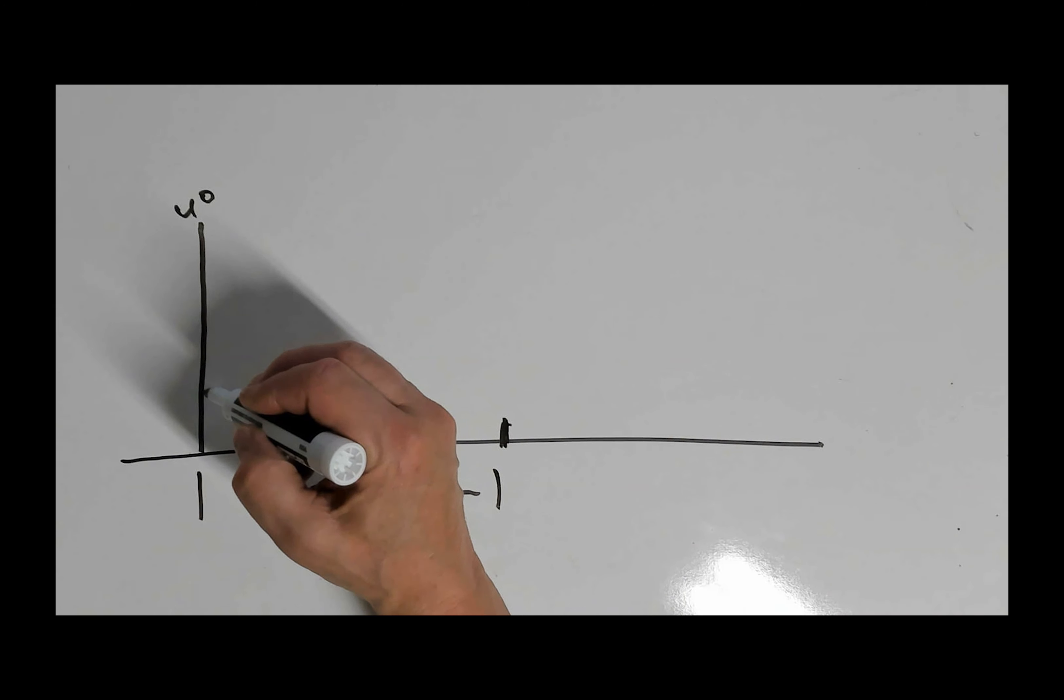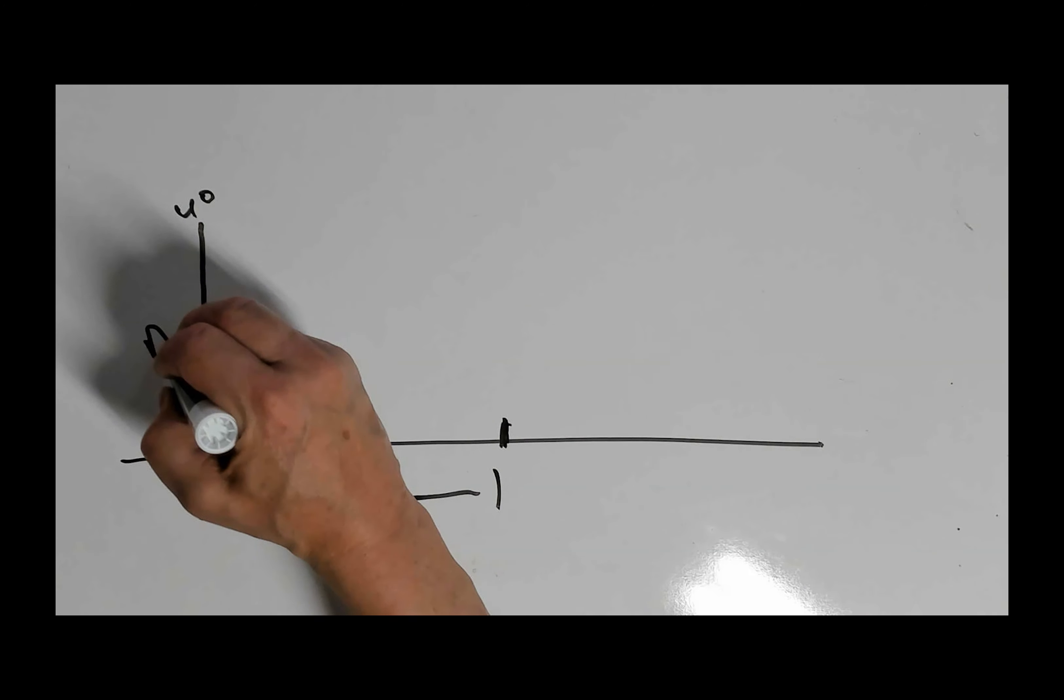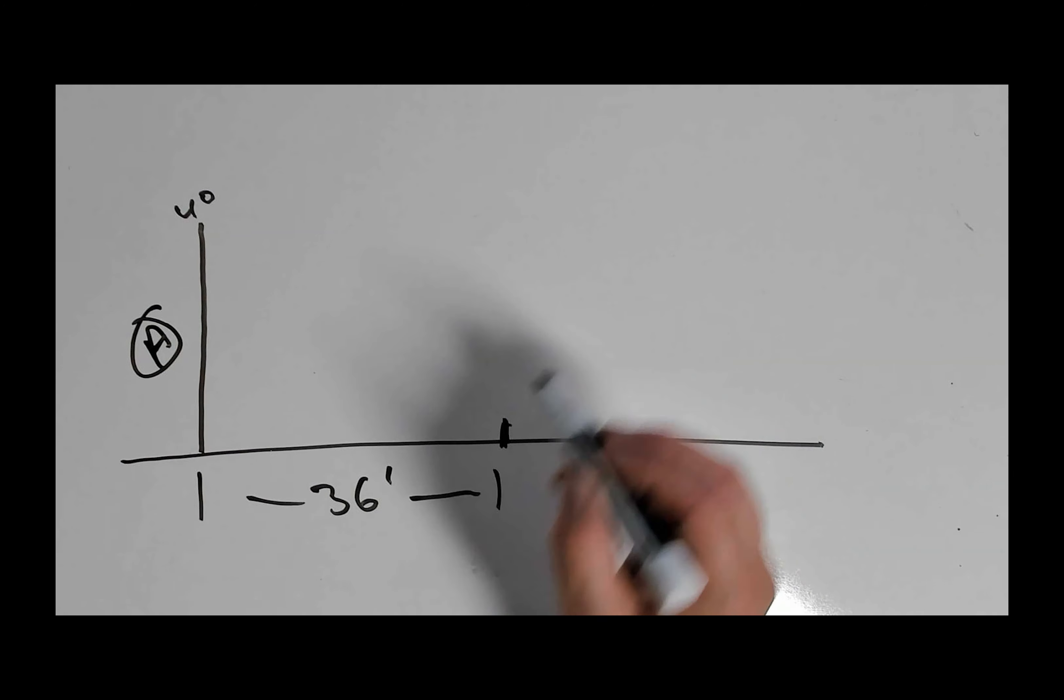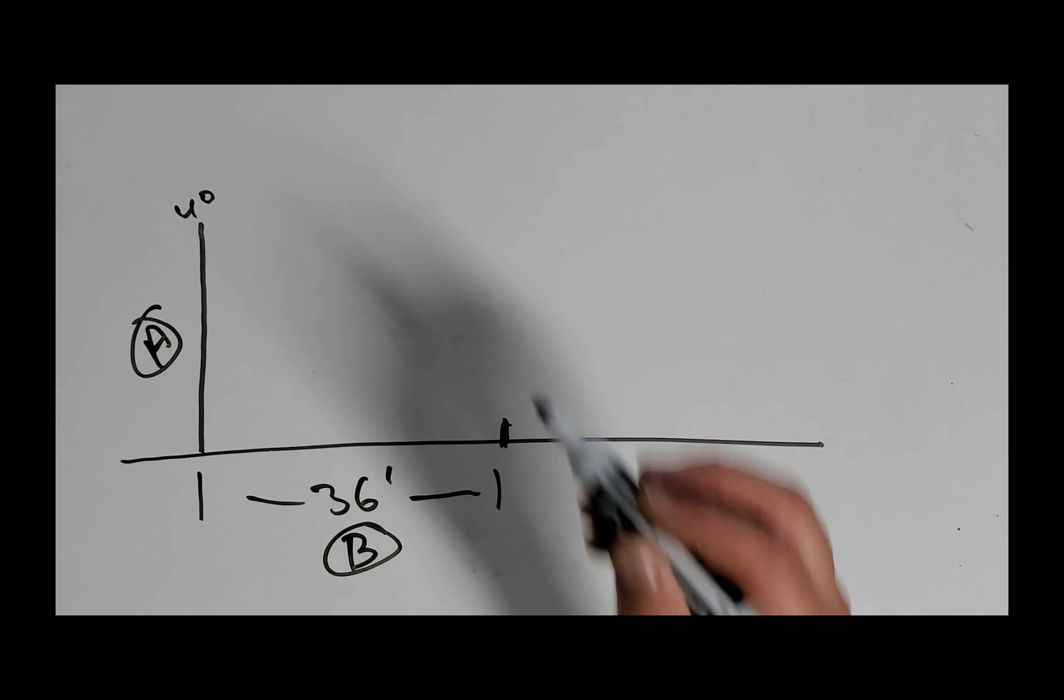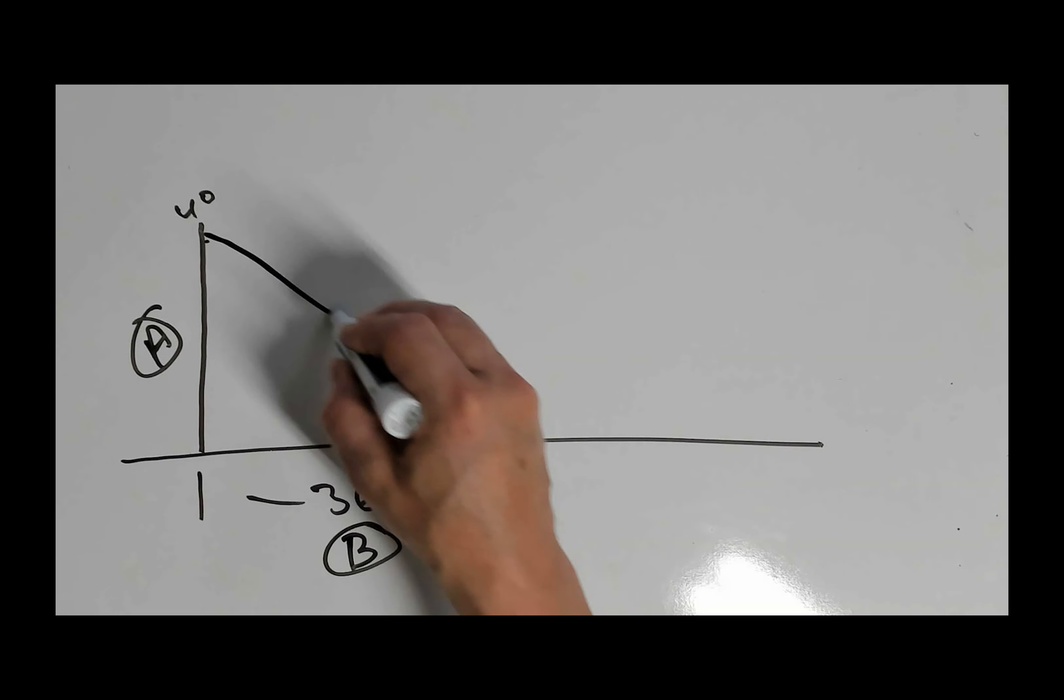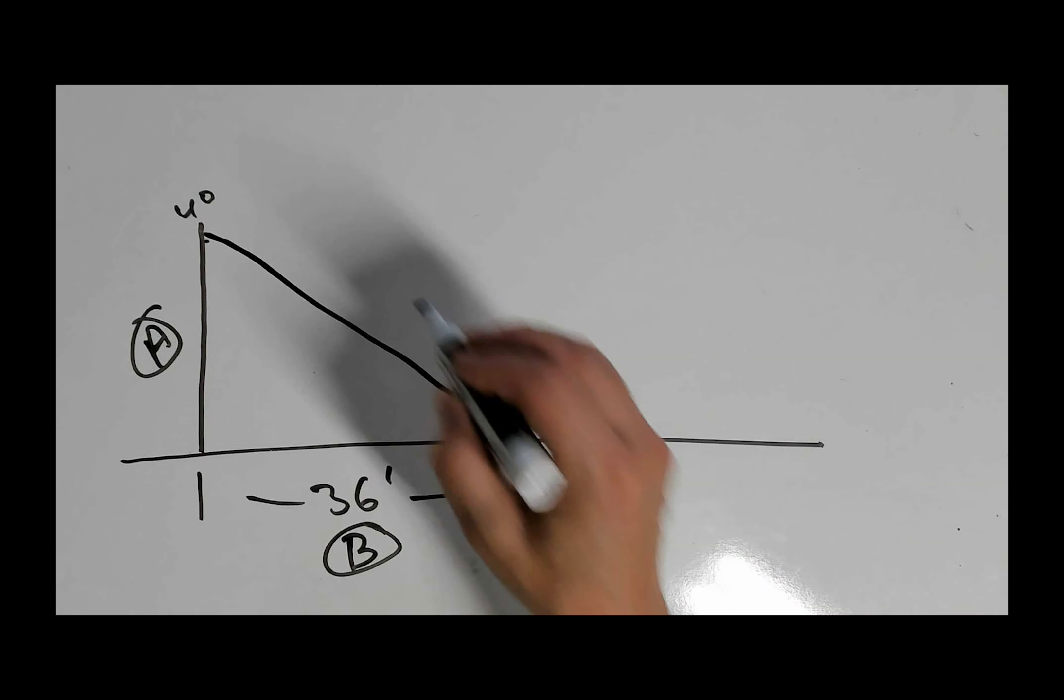Okay, now our mast is 40 foot. Let's go ahead and get our variables here. We'll use the mast as our variable A. Okay, B is going to be the ground or the distance between the mast and the antenna anchor. C will be our antenna guy lines.